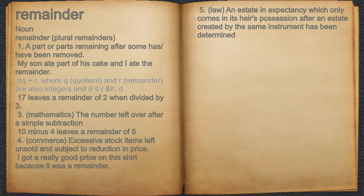2. Mathematics: the amount left over after subtracting the divisor as many times as possible from the dividend without producing a negative result. If n and d are integers, then n can always be expressed in the form n equals dq plus r, where q and r are also integers and 0 is less than or equal to r, which is less than d. For example, 17 leaves a remainder of 2 when divided by 3.